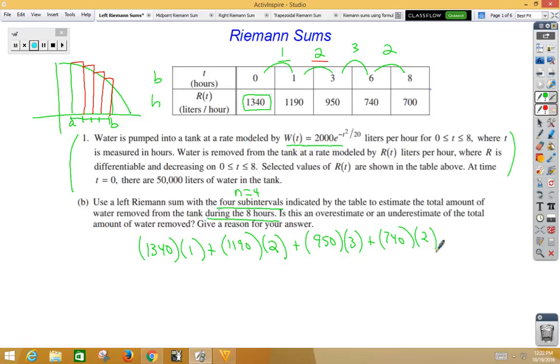It then says, is this an overestimate or an underestimate? Well, to do that, you need to look at the Y values, or in this case, the R of T values, and notice that they are decreasing, which matches up with our picture over here. Notice, then, that the rectangles all have error above the curve, so it would be an overestimate.